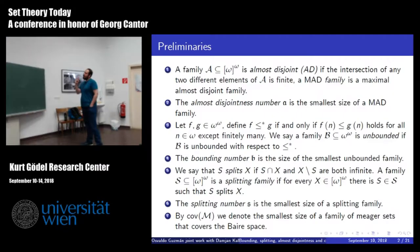So I think that all of these already introduced in previous talks. A family A subset of omega to omega is almost disjoint (AD) if the intersection of every two elements of A is finite. A MAD family is a maximal almost disjoint family. The almost disjoint number a is the smallest size of a MAD family.